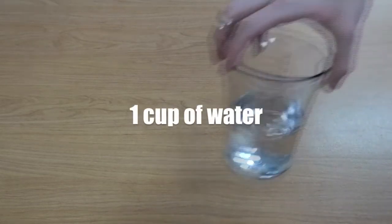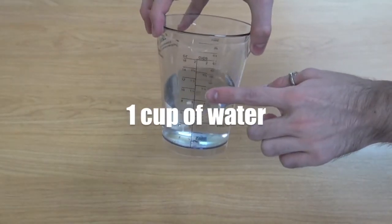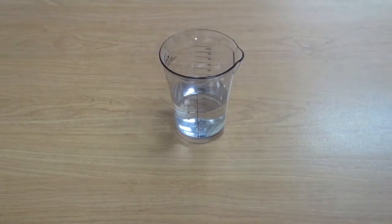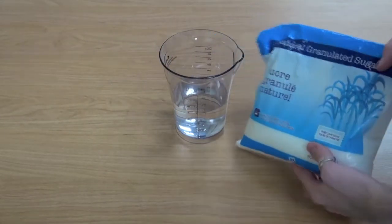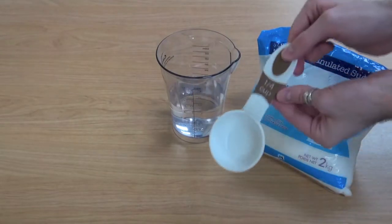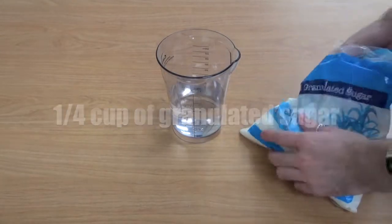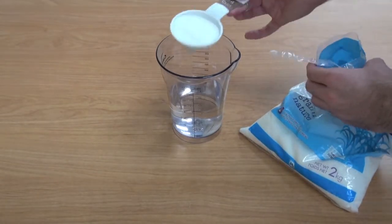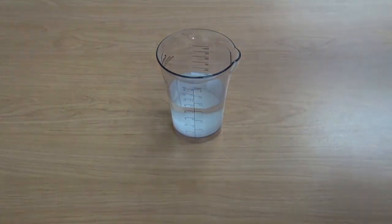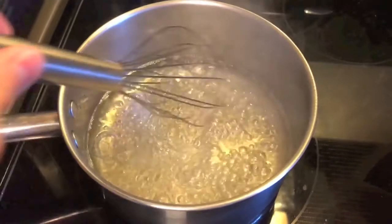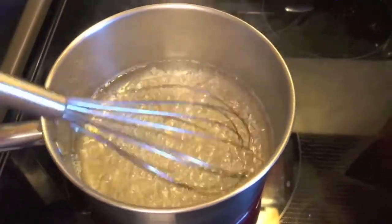First, to make our nectar, we're going to take about one cup of water and mix in about one-fourth cup of granulated sugar. Once mixed, you can bring it to the stovetop to fully combine the mixture by bringing it to a boil.